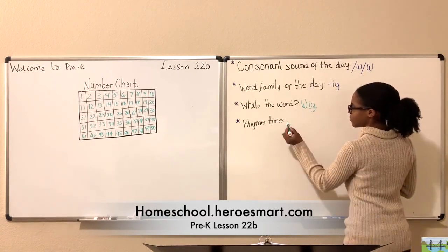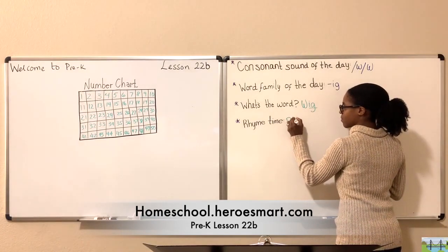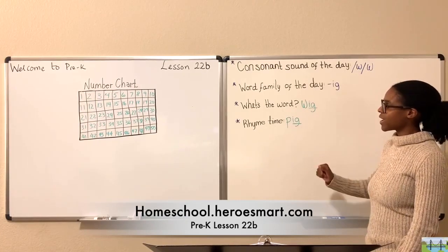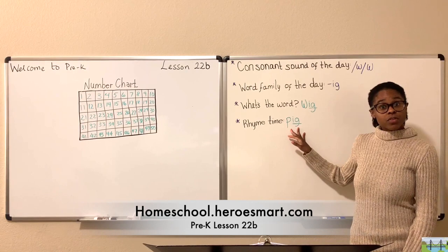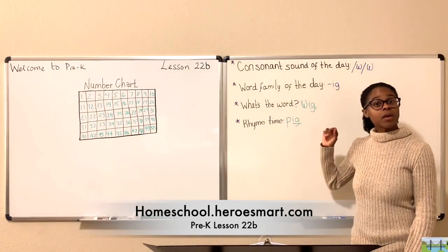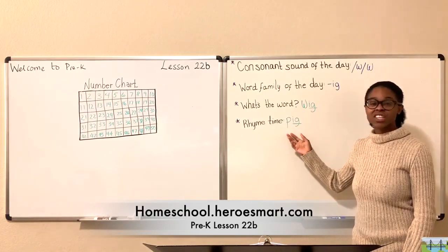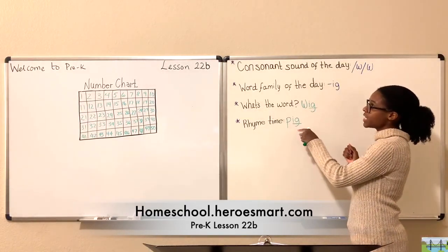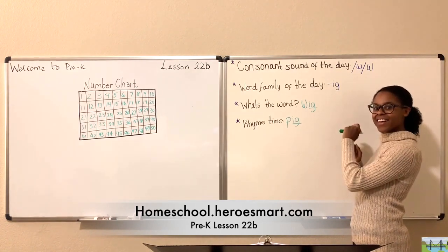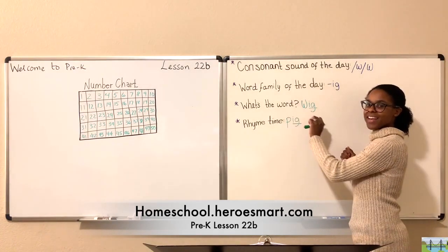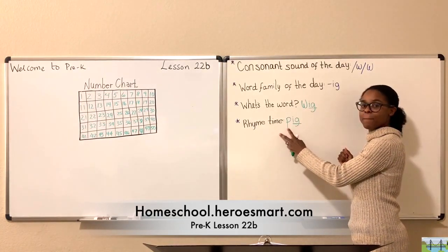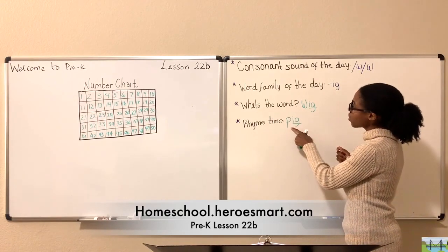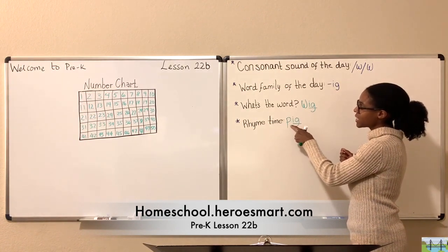I've got one. What about pig? Pig, pig rhymes with wig. Pig comes with this initial onset sound: P, p, p — or you could say the initial phoneme if you know that word. When we attach our word family, which is ig, then you get the word P, ig. P, ig. Pig. This word spells pig. P, I, G is how you spell the word pig.